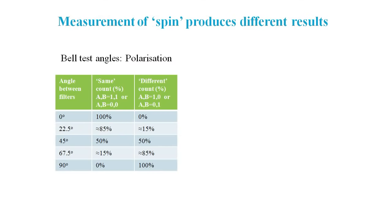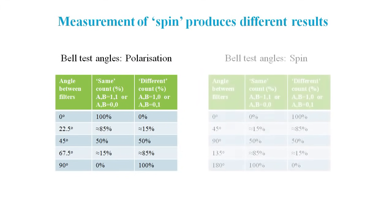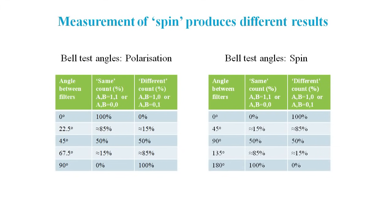If we measure a property called spin instead of polarization, then we get two different results. These tables show how the quantum mechanics predictions differ in the two cases. We can extend the hidden variable solution to cover the measurement of spin.